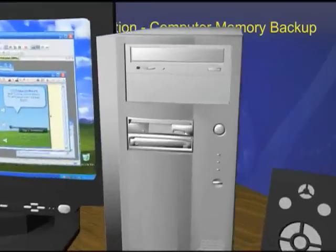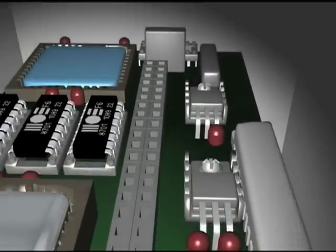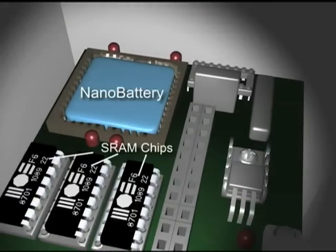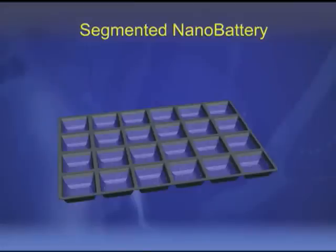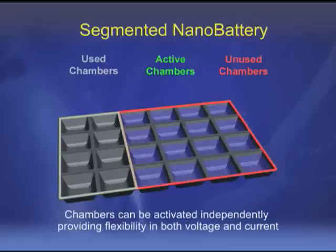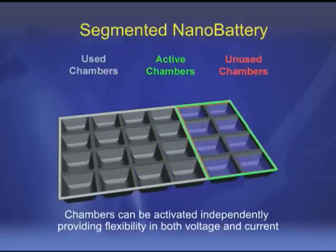A third activation method is electrical, as in a computer memory backup battery. Another advantage of this design is that the battery can be partitioned into separate cells which may be activated separately in a cascading sequence. This can further extend overall battery life and permit more control over voltage and current under different operating conditions.